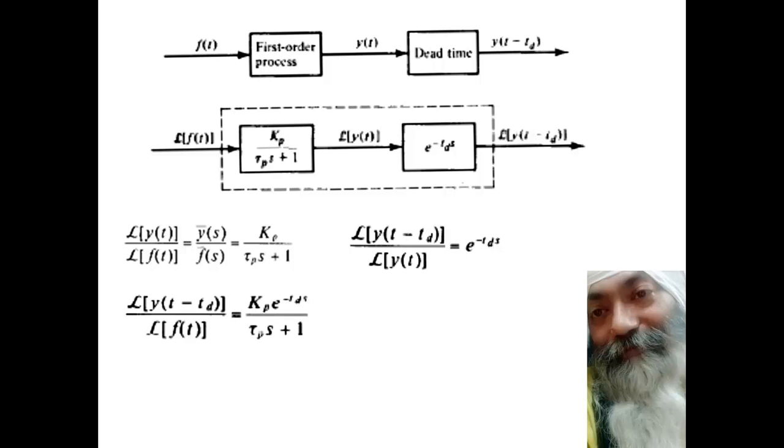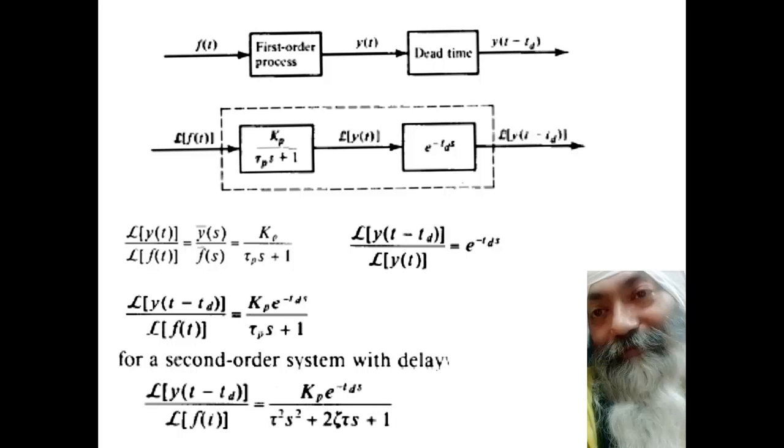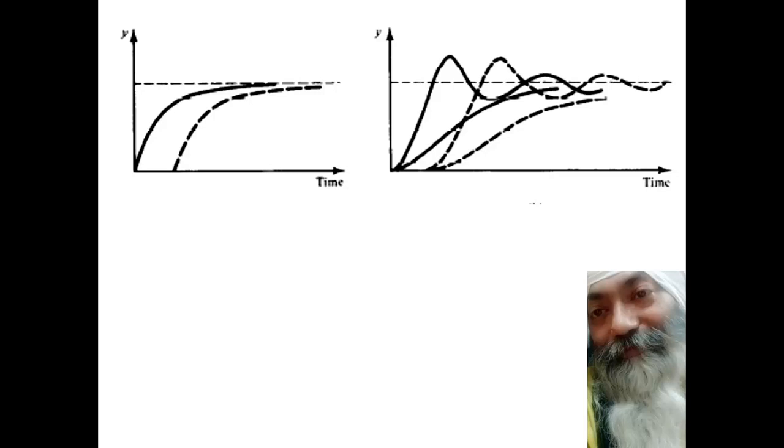If at all we have a second-order system with the delay, on the same account we will have the transfer function Kp upon tau square s square plus 2 zeta tau s plus 1. It will also get multiplied by e to the power minus td s. So this is what we see is happening over here, as you can see over here.